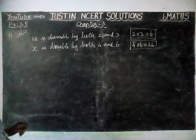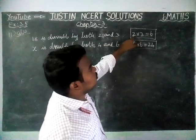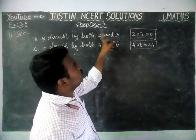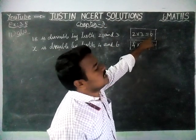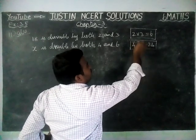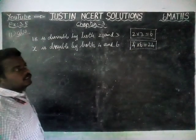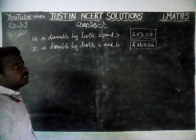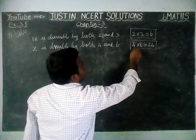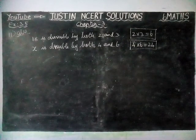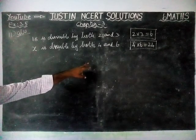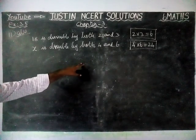We are going to check the possibilities. 2 and 3 are co-prime numbers. Therefore, if a number is divisible by both 2 and 3, definitely that number will also be divisible by 6. But in this case, 4 and 6 are not co-prime numbers. Therefore, there is no guarantee it should be divisible by 24. In some cases it may be divisible, and in some cases it may not be.